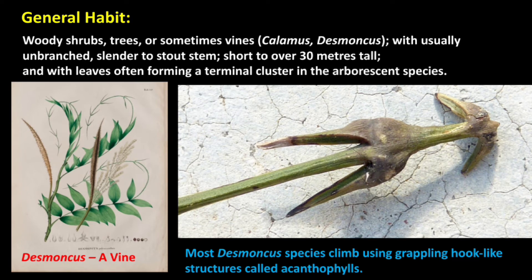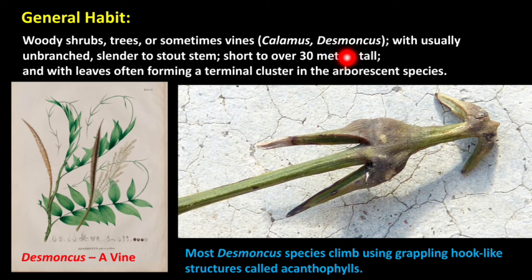General habit of family Arecaceae: the family is represented by woody shrubs, trees, or sometimes vines. Vines are plants whose stems are very weak and require a support to climb; these are also called climbers. Examples of vines in Arecaceae are Calamus and Desmoncus.